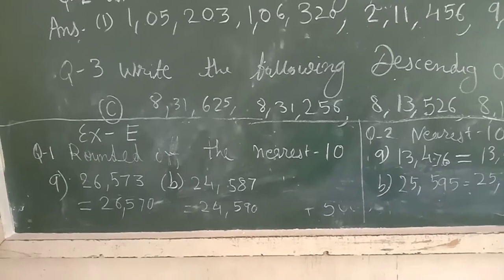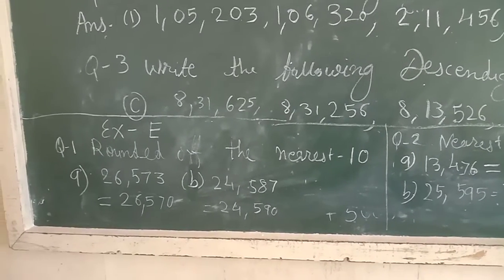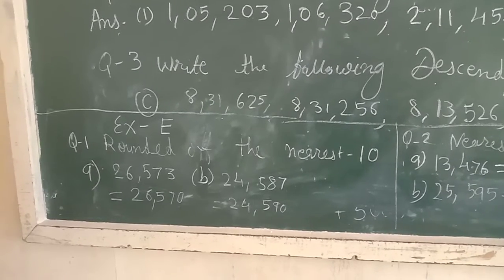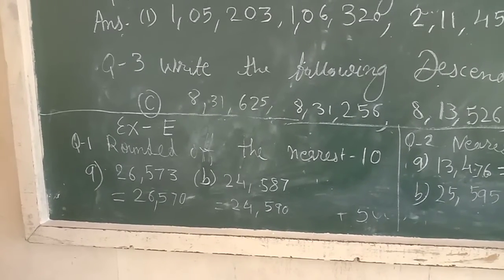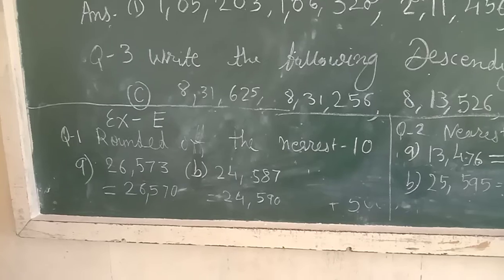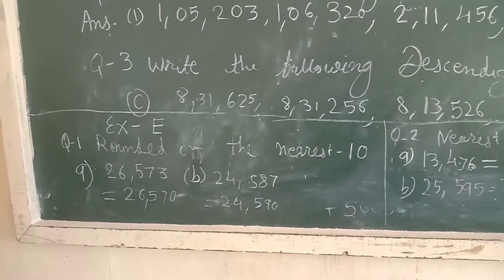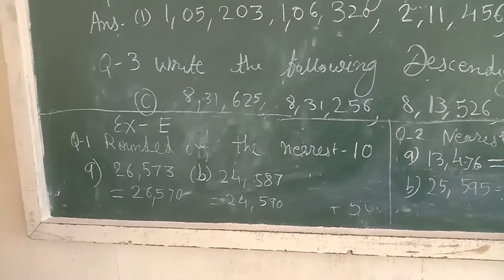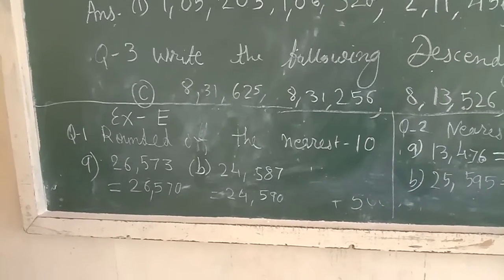First: 26,573, answer: 26,570. B: 24,587, answer: 24,590. Other numbers complete.